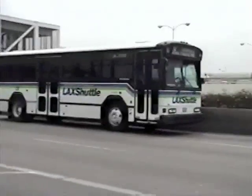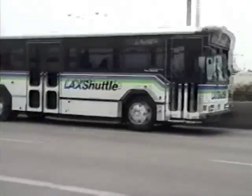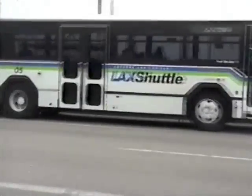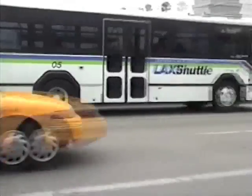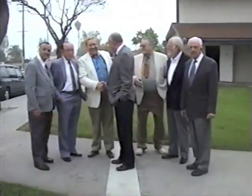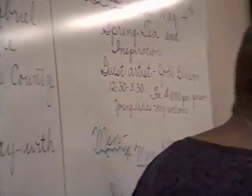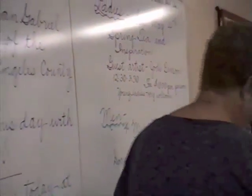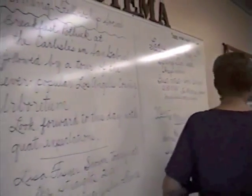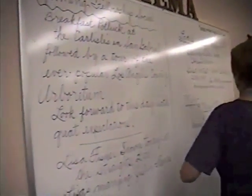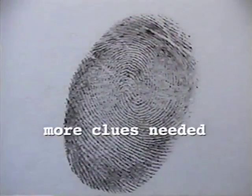When used as a verb, board describes getting on a ship, plane, train, or one of these. A board of directors has a different meaning than a writing board. Apparently, board can have more than one meaning. To interpret correctly, more clues are needed.